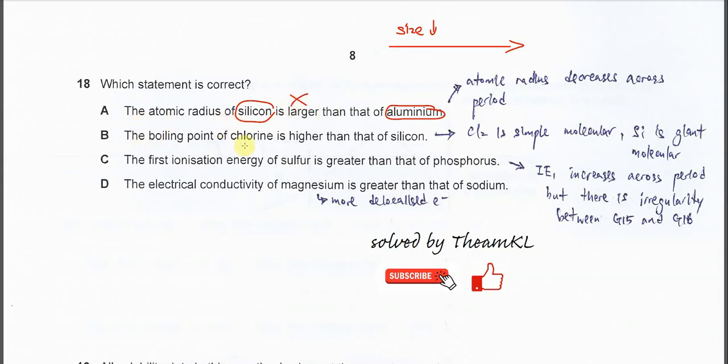For B, the boiling point of chlorine is higher than silicon. Chlorine is a simple molecule which has weak ID-ID forces between molecules.